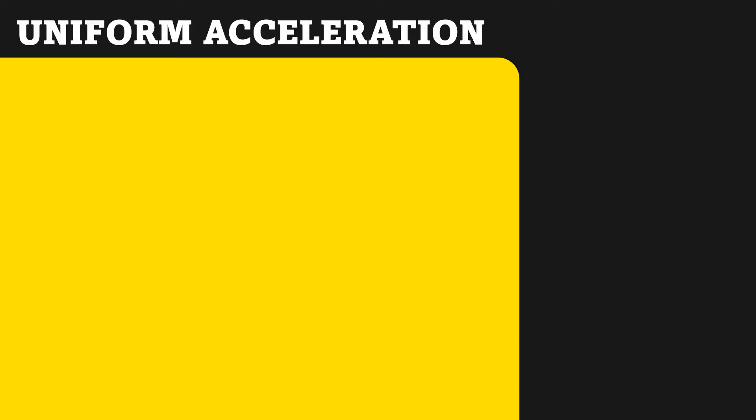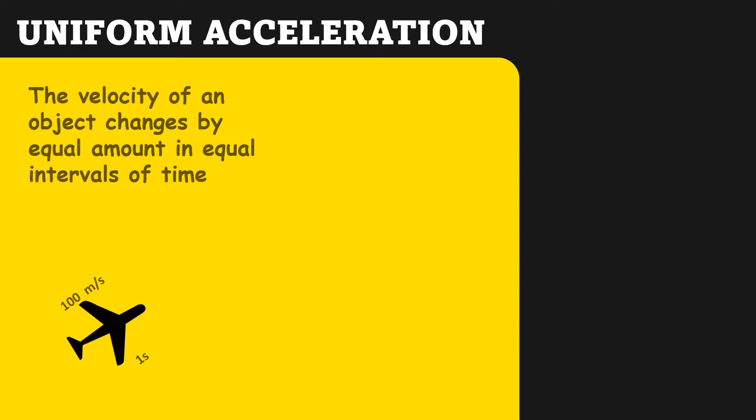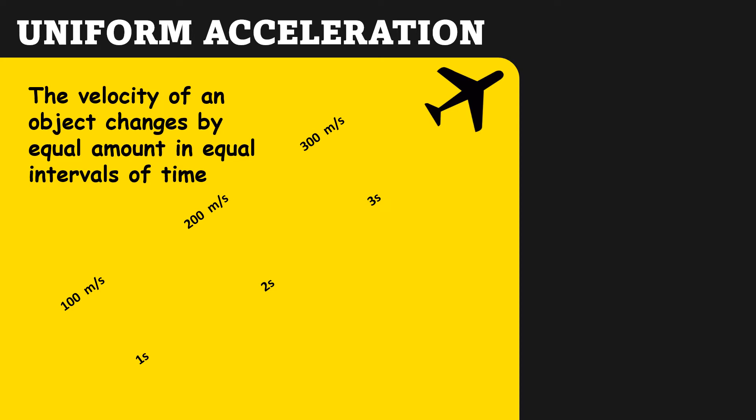Let us first study uniform acceleration. Considering a moving object, if we look at its velocity with respect to time, if the velocity changes by equal intervals in equal intervals of time, then we call that motion uniform acceleration.